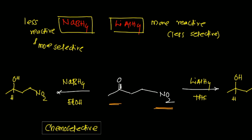With NaBH4, only the carbonyl group is reduced and the nitro group remains intact. These are called chemoselective reactions — when a reagent selectively reacts with one functional group while leaving the other intact. Sodium borohydride is more selective than lithium aluminum hydride because in LiAlH4 both metals (lithium and aluminum) are highly reactive, whereas in NaBH4 boron belongs to the p-block family and is less reactive.